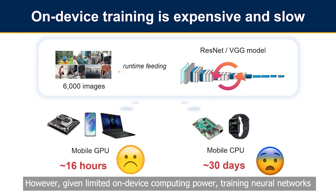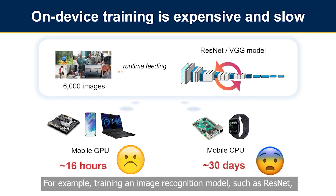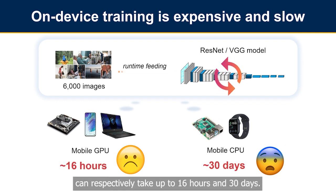However, given limited on-device computing power, training neural networks on mobile devices is incredibly slow. For example, training an image recognition model such as ResNet with 6,000 training images on mobile GPU and CPU platforms can respectively take up to 16 hours and 30 days.